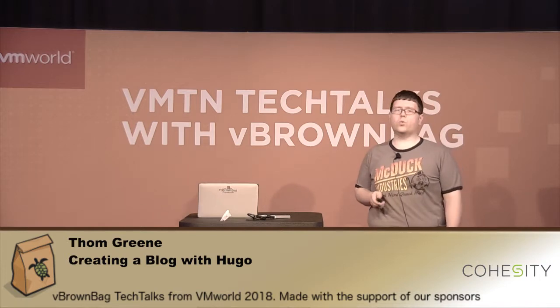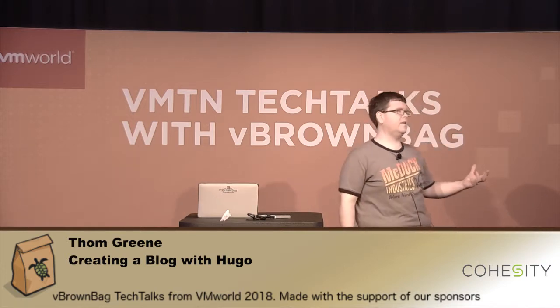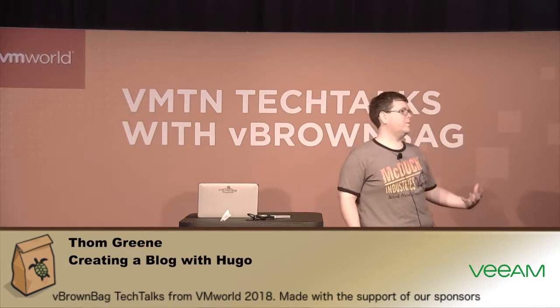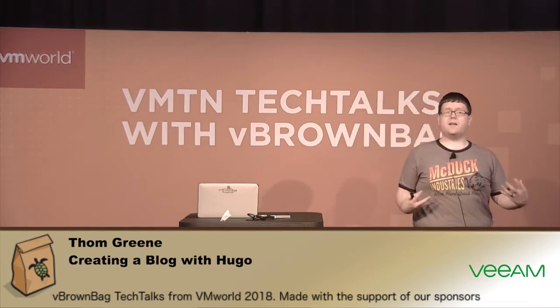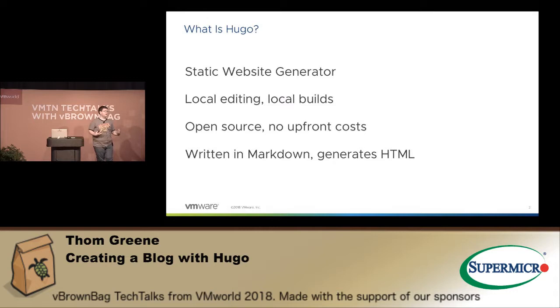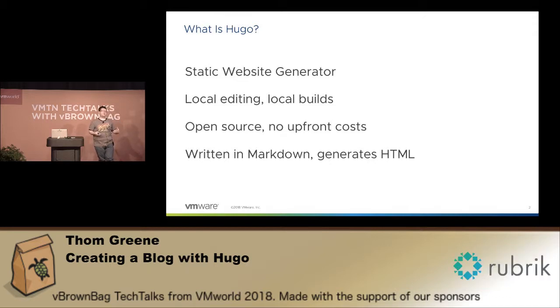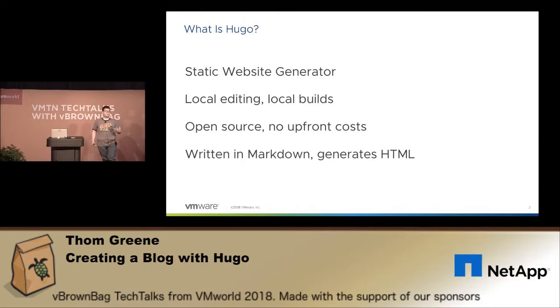Hi everyone, my name is Tom Green, and we're going to be talking about creating a blog with Hugo. Hugo is a static HTML generator. It's helpful for creating a website if you're not using any sort of JavaScript or database pools and you're just doing a blog, say for a tech blog or whatever. There are a lot of different options out there, and Hugo is my preferred option.